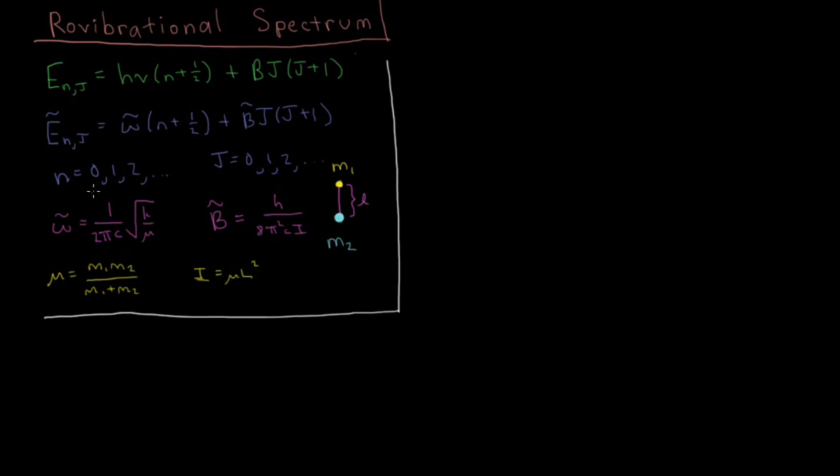This frequency here, omega bar, equals 1 over 2π times the speed of light times the square root of the spring constant divided by the reduced mass of whatever diatomic molecule we're talking about. And the rotational constant B bar is Planck's constant over 8π² times the speed of light times the moment of inertia of that same molecule. Reduced mass following this equation here, product of the masses over their sums, and the moment of inertia being the reduced mass times the bond length squared.